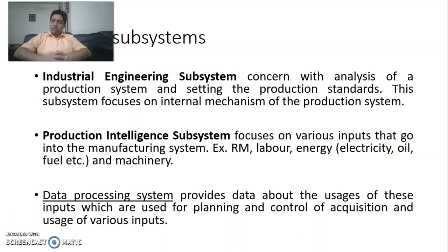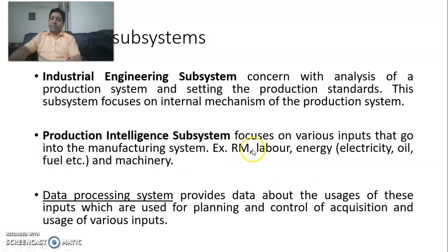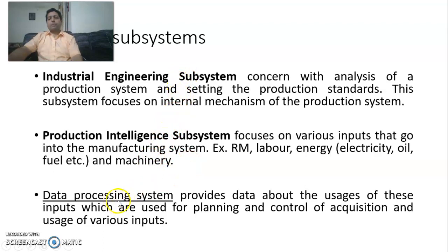The industrial engineering subsystem is concerned with analysis of the production system and setting production standards. This subsystem focuses on the internal mechanism of the production system. The production intelligence subsystem basically focuses on various inputs that go into the manufacturing system — for example, raw material, labor, energy in the form of electricity, oil and fuel, and machinery. To get information about these inputs, the system has to go beyond the boundaries of the organization.